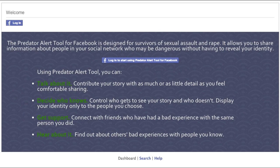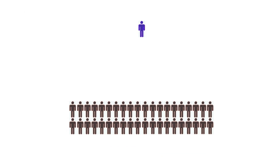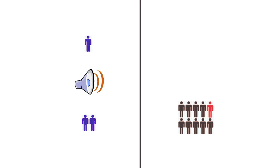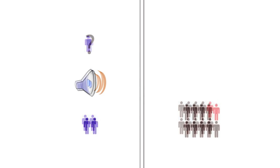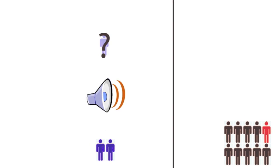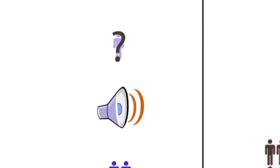The Predator Alert tool is a free app you can add to your Facebook account. Unlike websites that only allow survivors to share their stories publicly, the Predator Alert tool's core feature is its visibility settings. You can choose to share your story publicly, but you can also share with friends only, or with other users who have shared information about the same person you did. Whether you want to post anonymously or reveal your identity is also up to you.